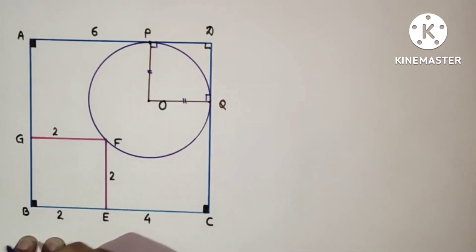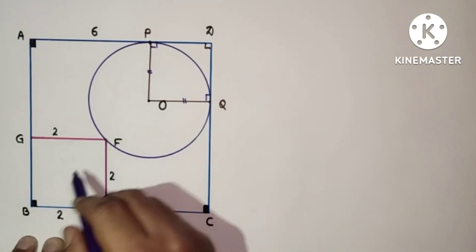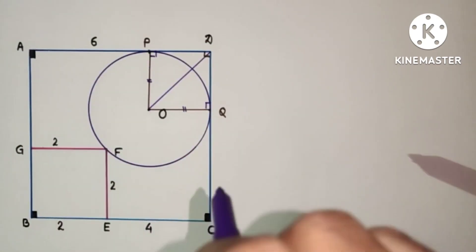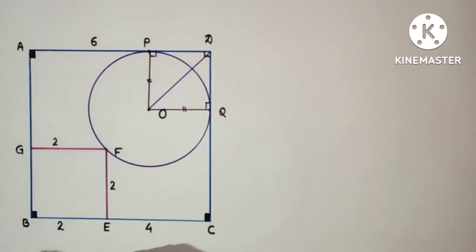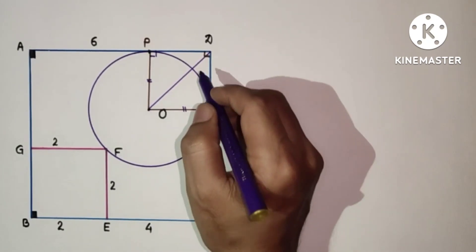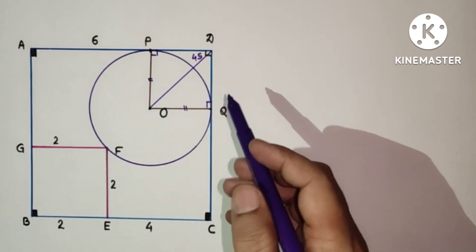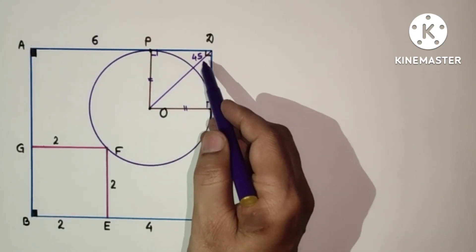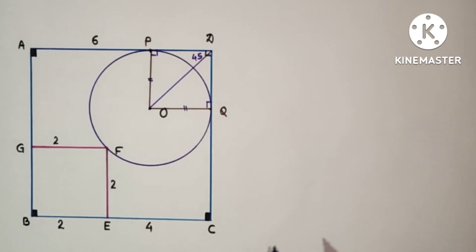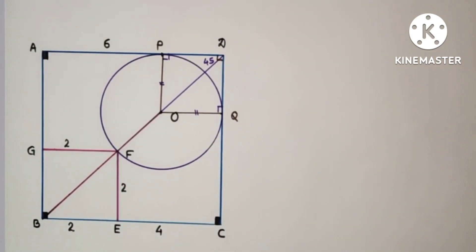Means BD is a diagonal of the bigger square and will pass through F and O. If we join DO and extend it, this DB will be a diagonal. Because this is 45, and in case of square, diagonals bisect the angle. Means this is 45 and this will also be 45. Joining that, DB is now diagonal. This is 45 and this is 45.